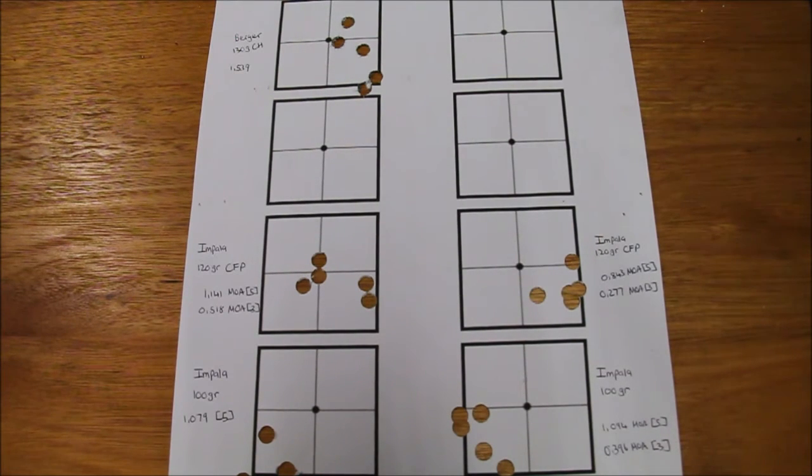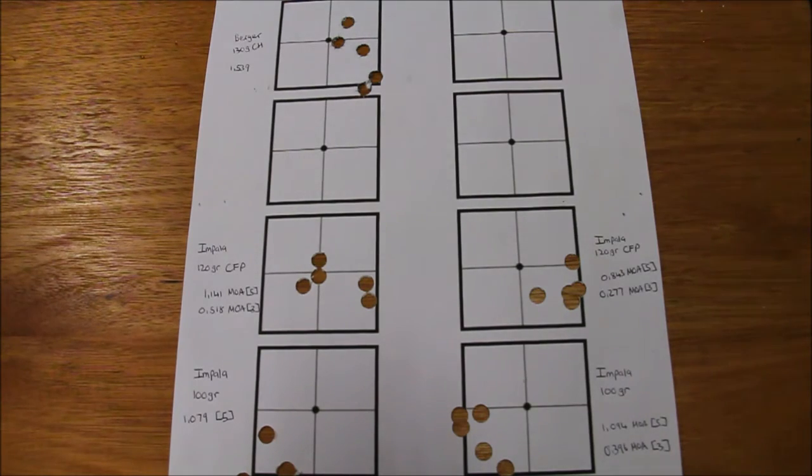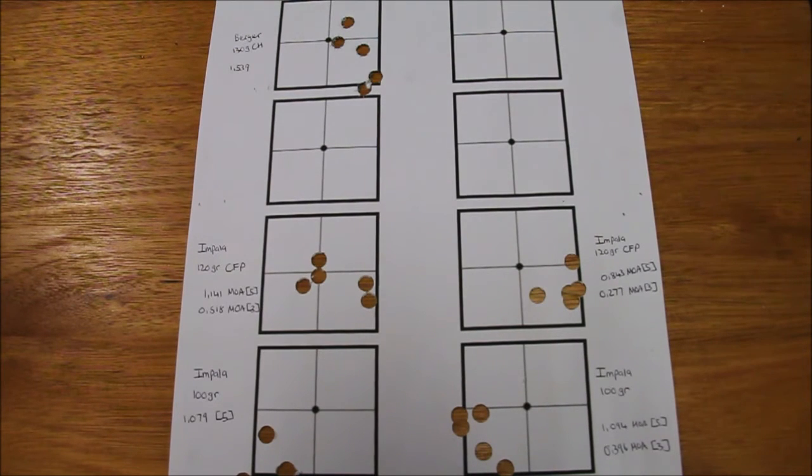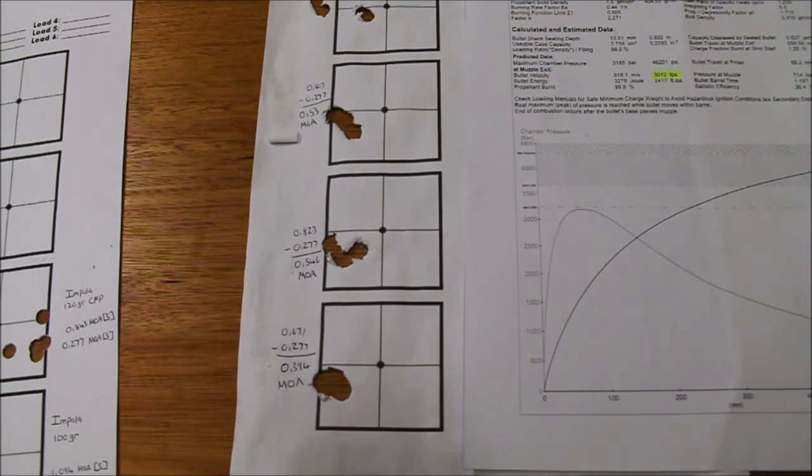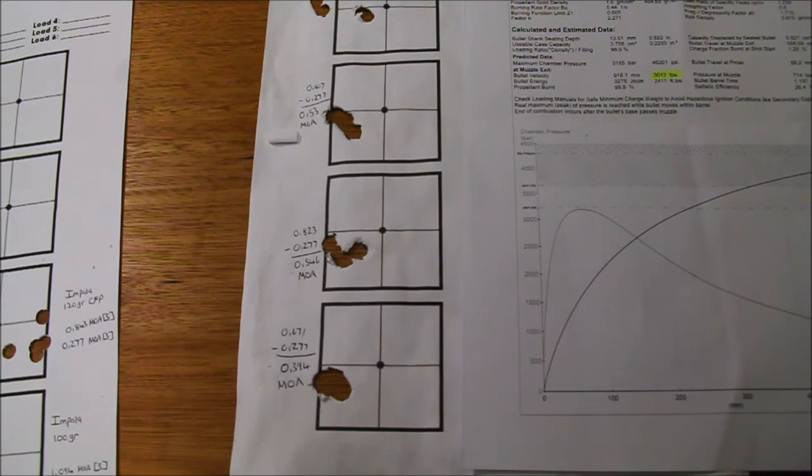I think the rifle is capable of shooting better if you tune the load because from previous experience I know that this rifle does not struggle to shoot half minute of angle. Just to prove this point, these are three shot groupings that I shot using my Berger 130 grain loads and as you can see here we're averaging just about half MOA.